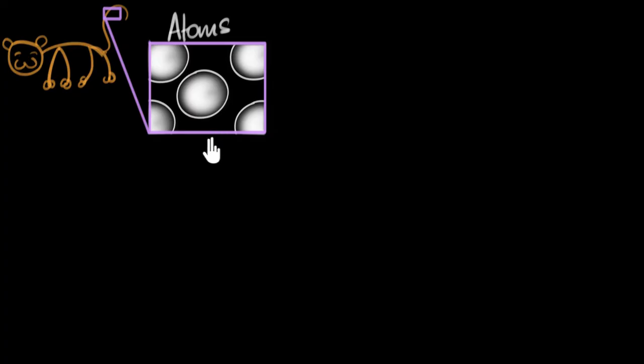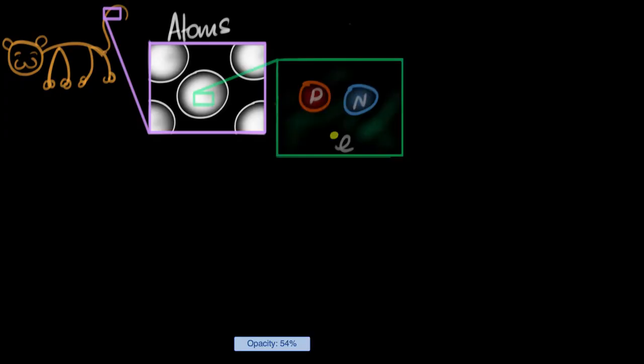But after the 1900s, we realized that atoms are not really indivisible. We found out that even atoms are made up of even smaller particles. And we have named them today. These smaller particles that even make up the atoms are called the protons, the neutrons, and the electrons. And almost all the atoms are made of these three particles.